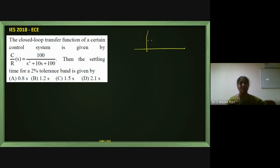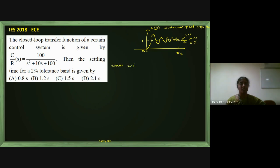For a second order system, the input is a step (dotted line at 1), and the output graph increases then shows some damping before settling down. This is called settling time. A 2% or 5% error is allowed. If the error is 2%, the settling time is 4 time constants; if 5%, it is 3 time constants.